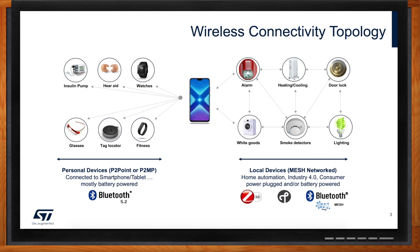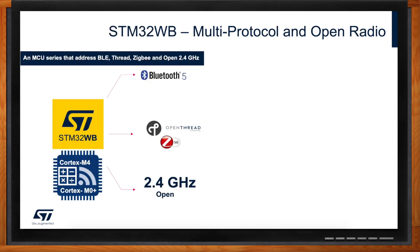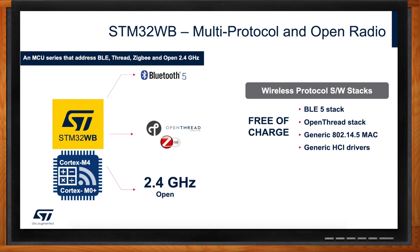With multiple protocols, multiple topologies, and the need to be compact and low power, this can lead to expensive solutions. What ST Microelectronics has done over the last two years is launch a new wireless microcontroller series called the STM32WB. It supports multiple protocols — Bluetooth 5.2, Thread, Zigbee 3.0, and open 2.4 GHz — and multiple topologies including point-to-point and mesh. It is secure, highly integrated, and very low power.